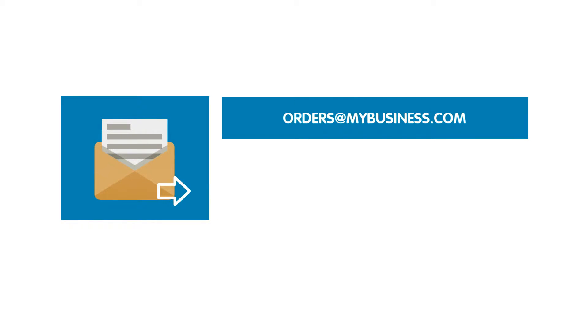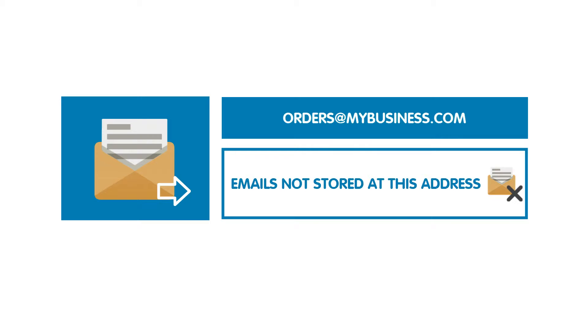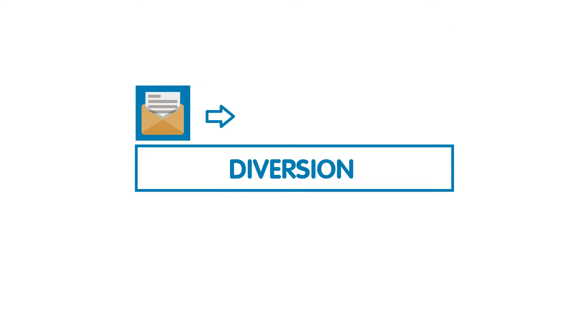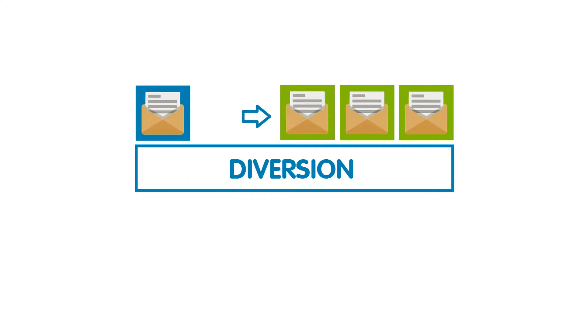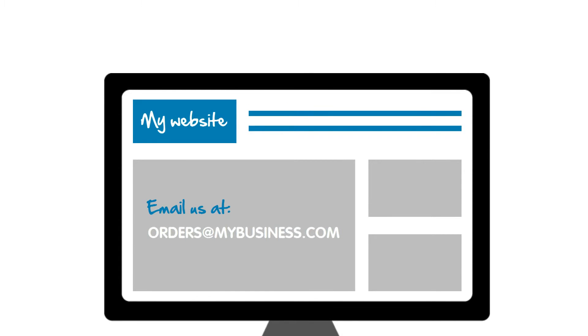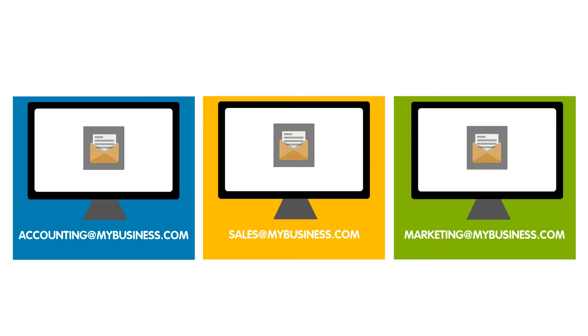Any emails sent to the forwarder, orders@mybusiness.com, will not actually be stored in a mailbox. This means that you will not be able to log into this account or view any emails for it using 123Webmail. See it as a sort of email cover or diversion — it is created to forward emails to another mailbox or multiple mailboxes. So you could advertise on your website for emails to be sent to orders@mybusiness.com, but these emails will actually be sent to the other mailboxes which you have already set up.